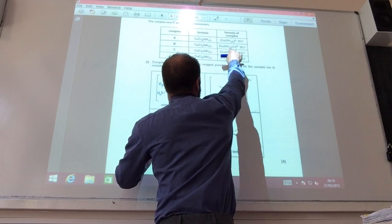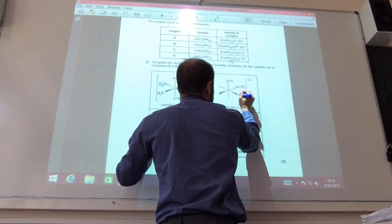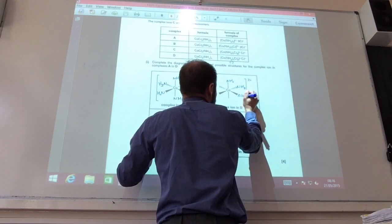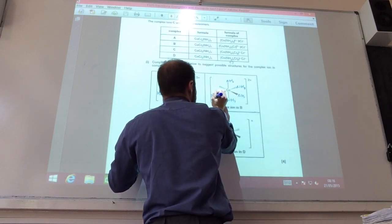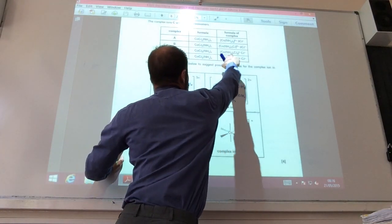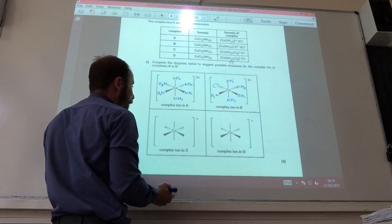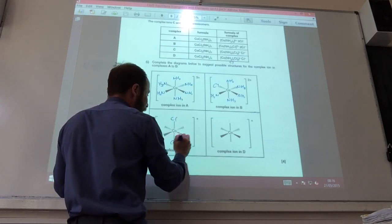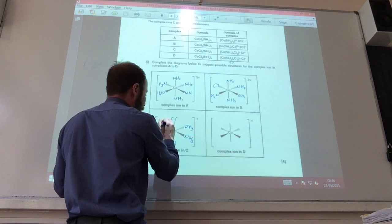For B, you've got five ammonium, so you can just put five around your cobalt, and you've got one chlorine like so. And for C, hopefully you can see it's the same formula, so you've got two different stereoisomers. You can have the Cl trans to each other, like so.